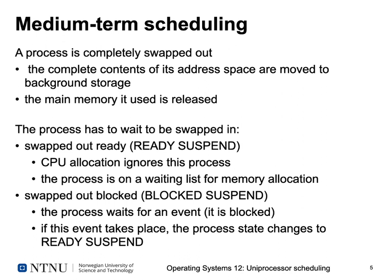In medium-term scheduling, we're concerned with swapping processes in and out of main memory. If we have more processes demanding more memory than is physically available, we have to move some main memory pages not currently used to secondary storage — to an SSD or swap space on a hard disk. In a simple model without paging, we can swap a process out completely and swap it back in. When completely swapped out, the process's entire address space is removed from main memory and stored in swap space, freeing that memory for other allocations.